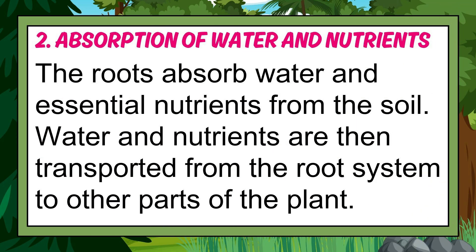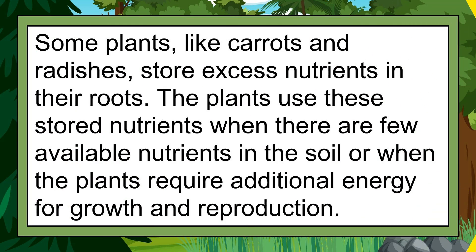2. Absorption of water and nutrients: The roots absorb water and essential nutrients from the soil. Water and nutrients are then transported from the root system to other parts of the plant. Some plants, like carrots and radishes, store excess nutrients in their roots. The plants use these stored nutrients when there are few available nutrients in the soil or when the plants require additional energy for growth and reproduction.